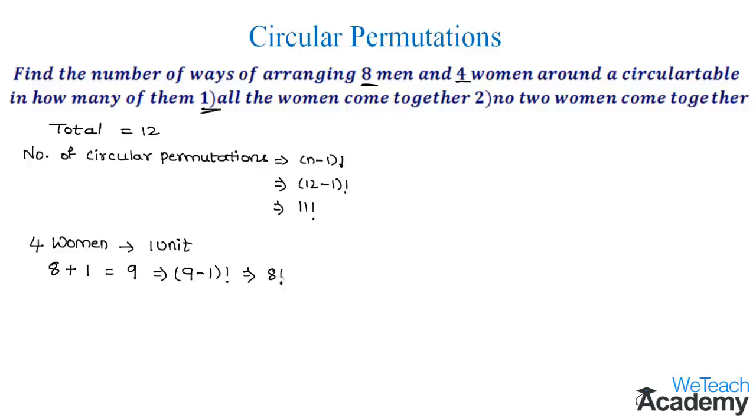Now these four women can be arranged among themselves in four factorial ways. Hence, by the fundamental principles, the required number of arrangements is eight factorial into four factorial.